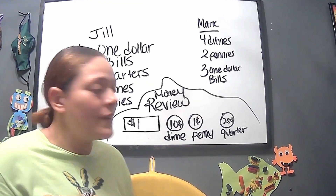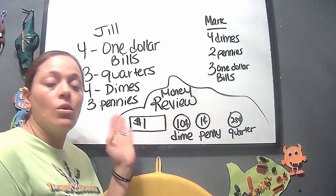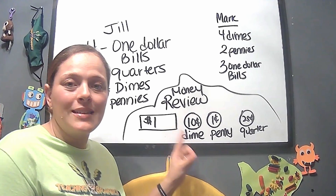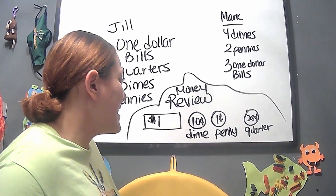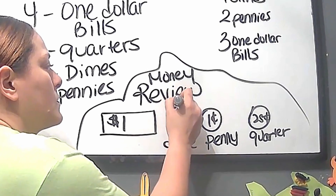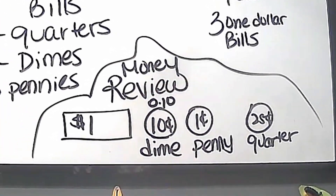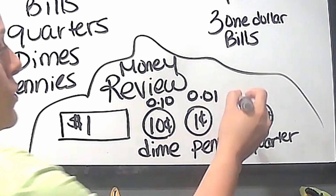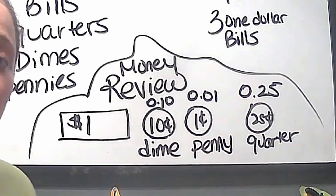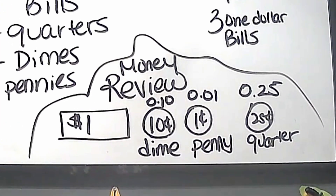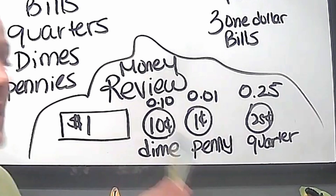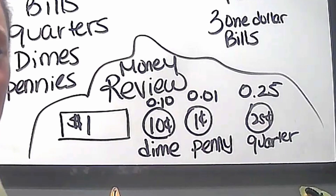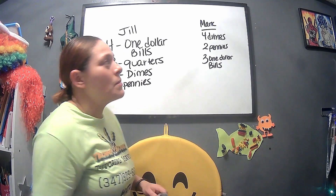First things first, you have to review money — if you forgot, that's totally fine. A one-dollar bill is a whole number. Dimes are 10 cents, or you can write it as 0.10. Pennies are one cent. A quarter is 0.25. Remember: dime is 10 cents, penny is one cent, and quarter is 25 cents.